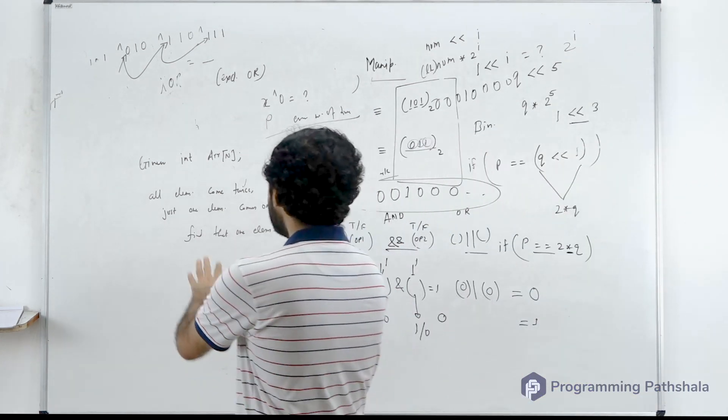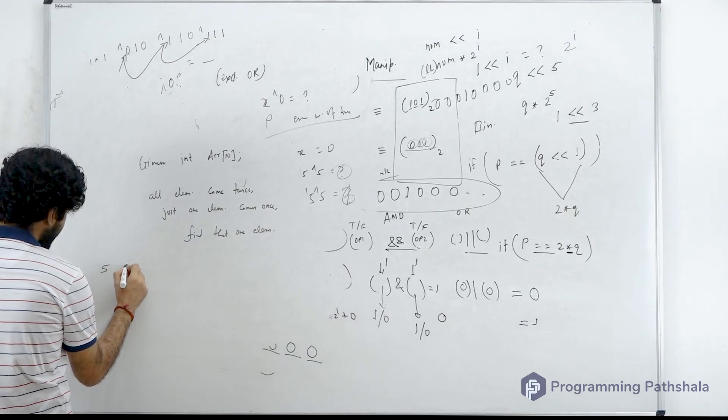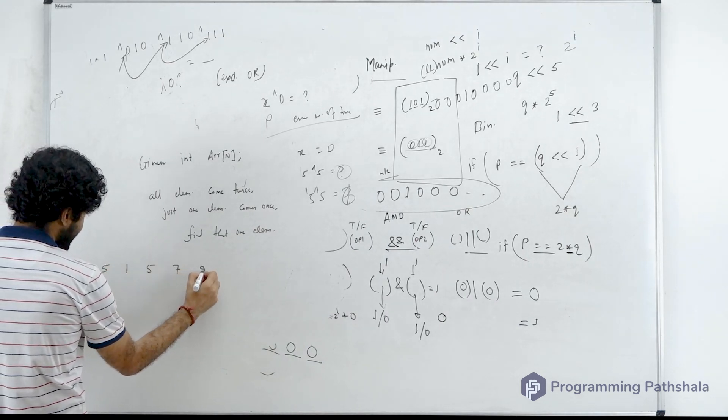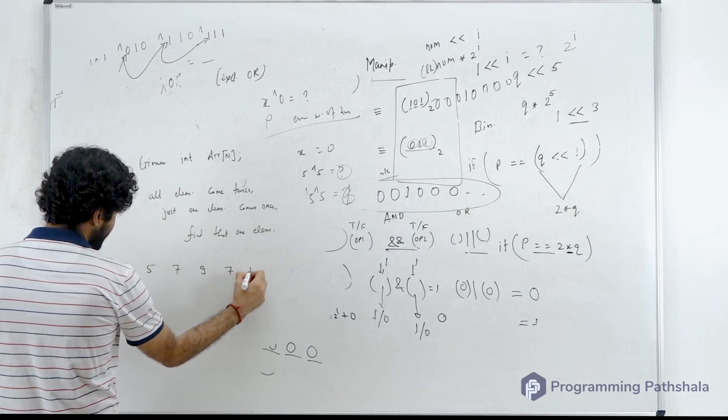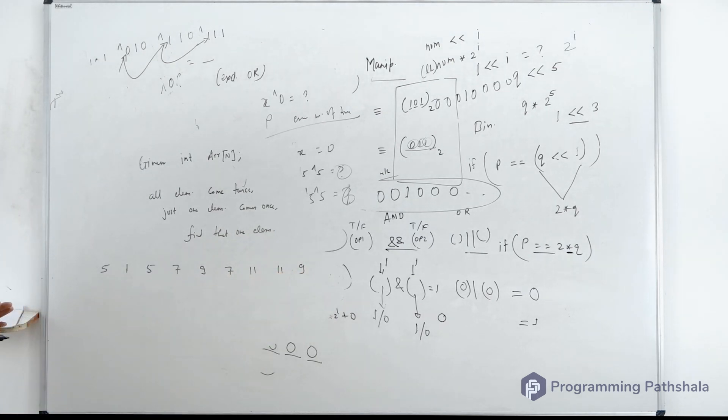Because if every element comes twice, let's say 5, 1, 5, 7, 9, 7, 11, 11, 9. Okay. First of all, tell me, is it a legitimate array according to the question? Yes, it is.